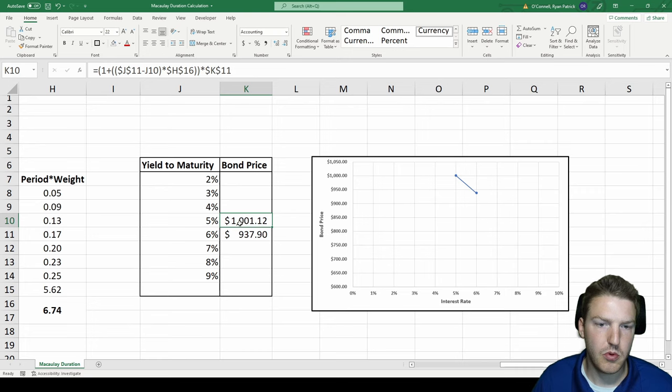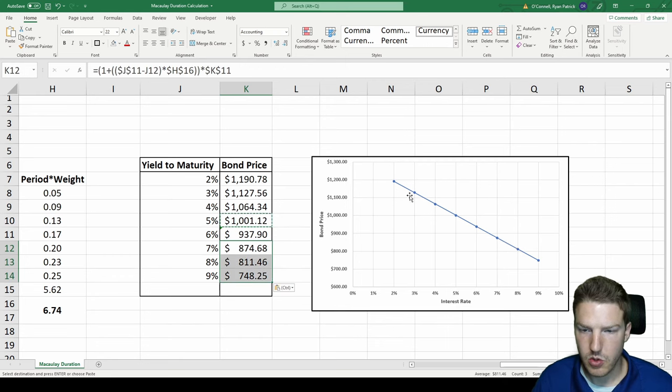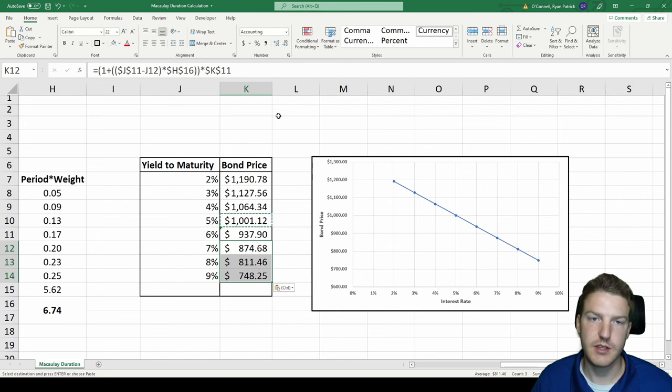So that gives us the price of the bond at 5%. You'll notice it actually increased in value because the interest rates decreased. So now let's see what happens when we go up to 2% or down to 9%. So you can see it's this linear relationship. As interest rates are increasing, the bond price is decreasing linearly.